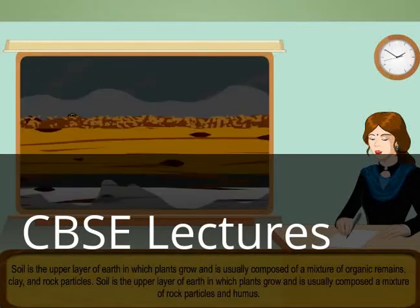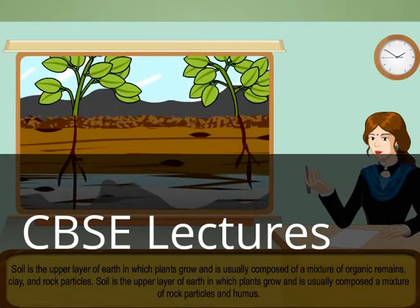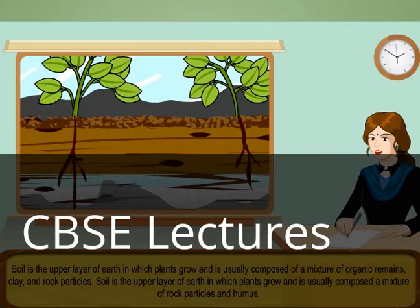Soil is the upper layer of earth in which plants grow and is usually composed of a mixture of organic remains, clay, and rock particles. Or, soil is the upper layer of earth in which plants grow and is usually composed of a mixture of rock particles and humus.